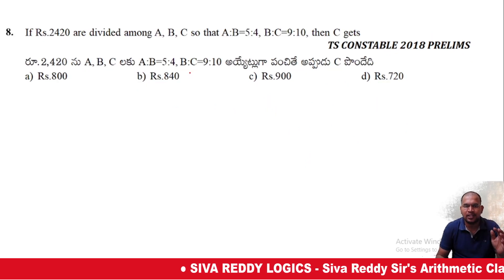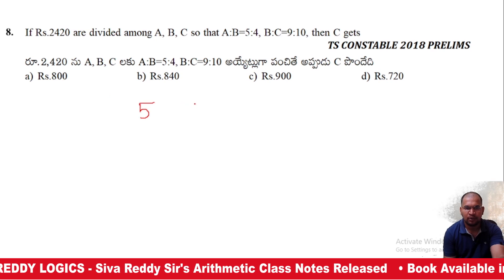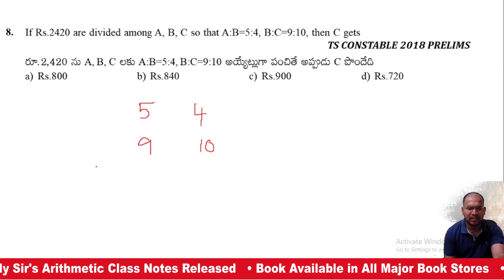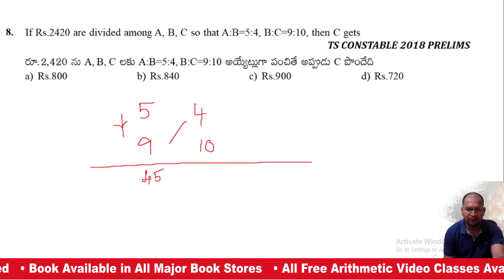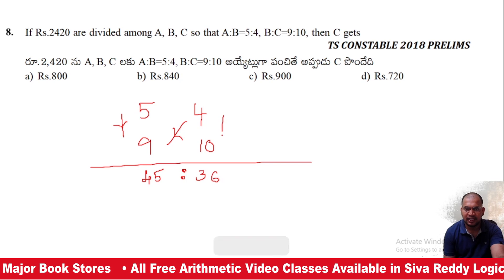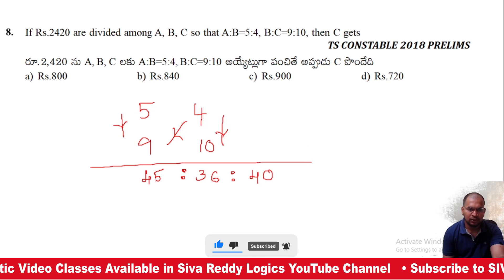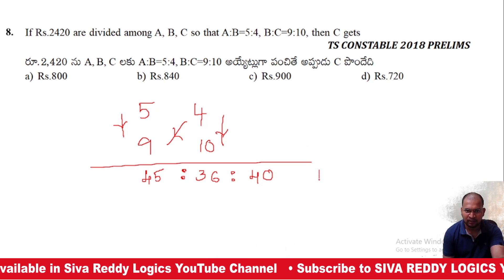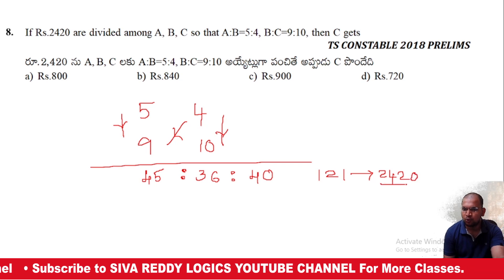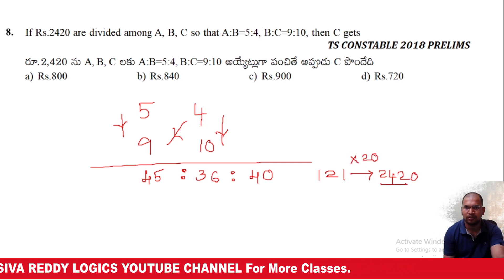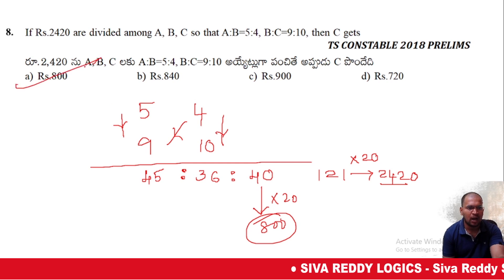Eighth question: If 2,420 is divided among A, B, C such that A:B = 5:4 and B:C = 9:10, find C's share. Working out A:B:C gives 45:36:40. C gets 40 parts out of 121 total. C's value is 40 into 20 equals 800 rupees. Option A will be the right answer.